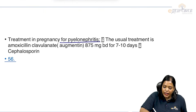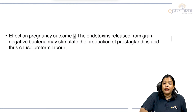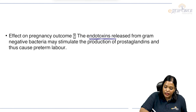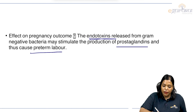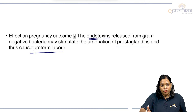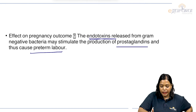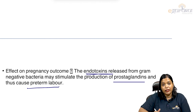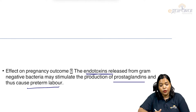Treatment for pyelonephritis in pregnancy is augmentin 875 mg BD for 7 to 10 days. Regarding the effect of UTI on pregnancy: gram-negative bacteria release endotoxins, which stimulate the production of prostaglandins, leading to preterm labor. So we have covered bacterial infections in pregnancy — group B streptococcus, UTI, and syphilis.